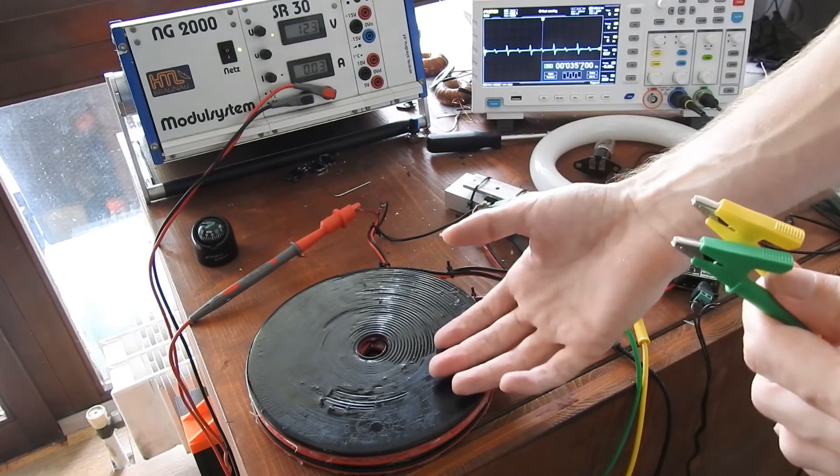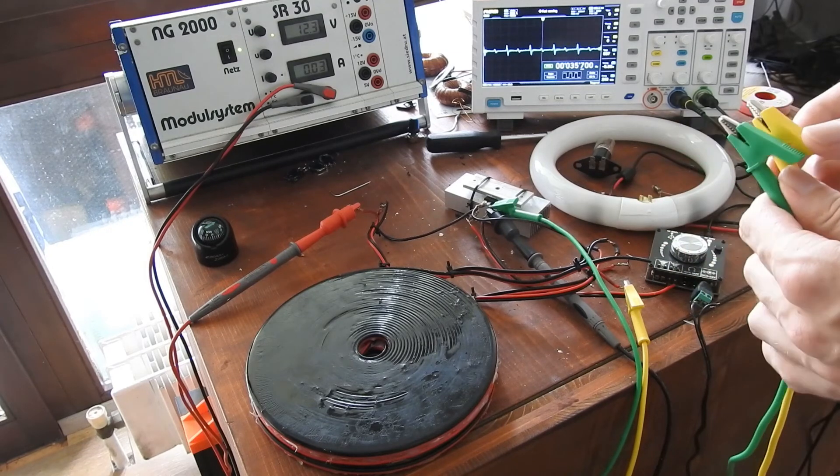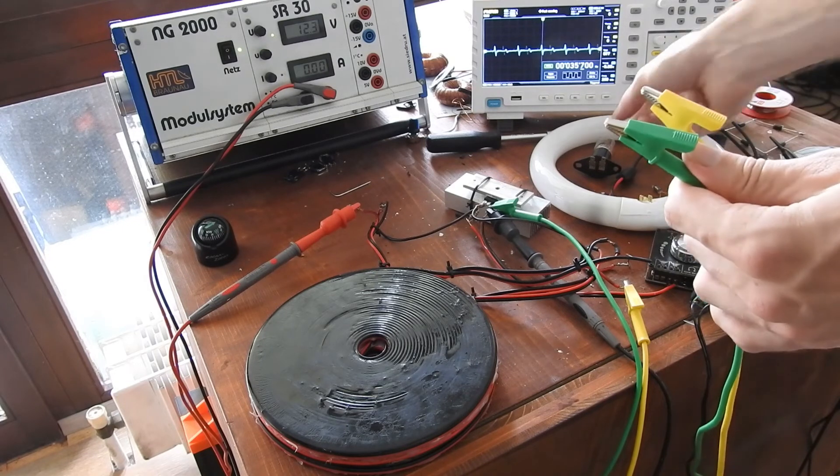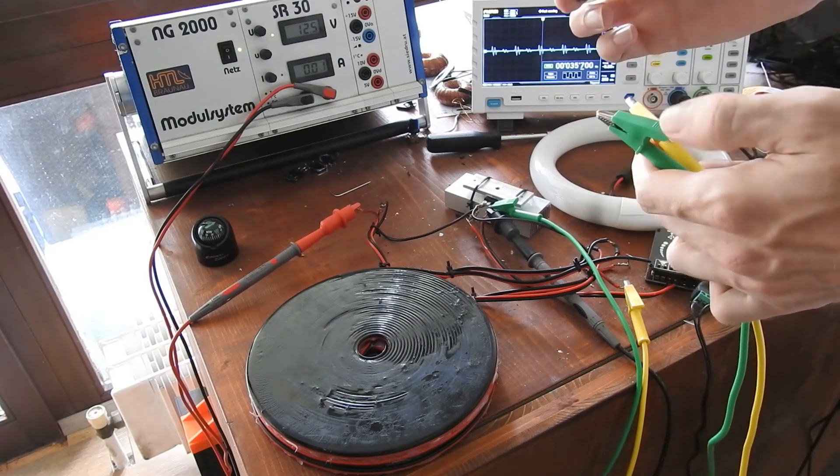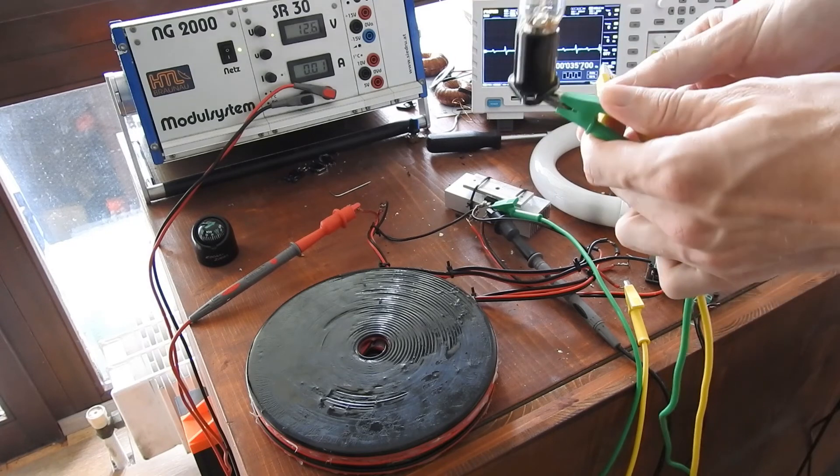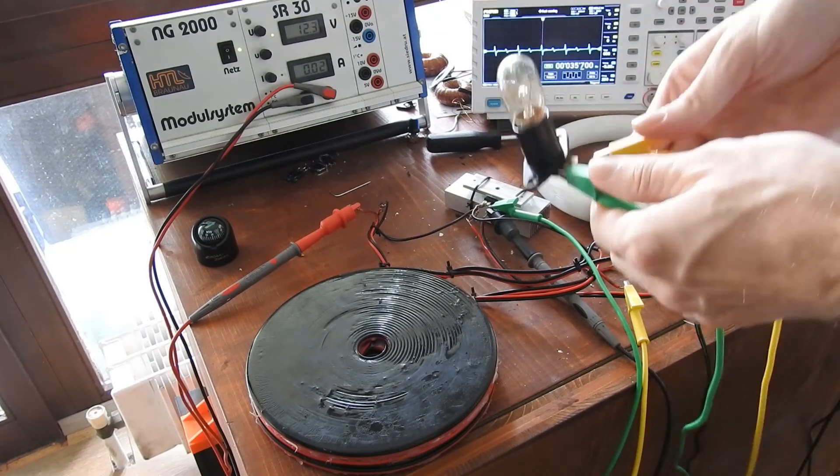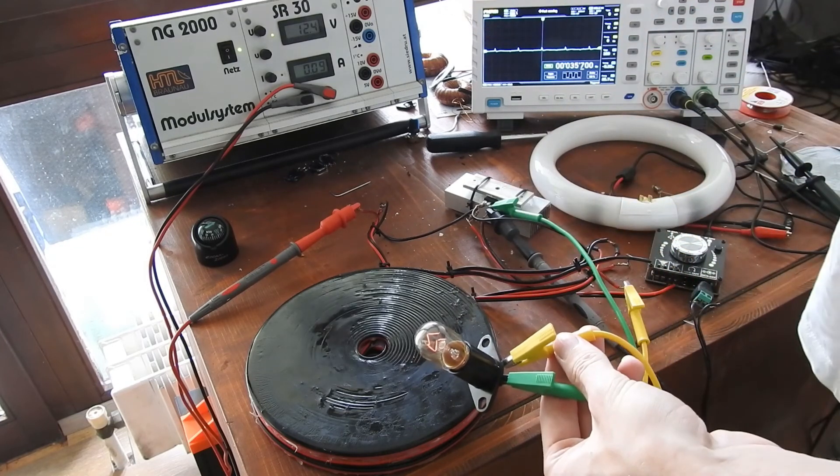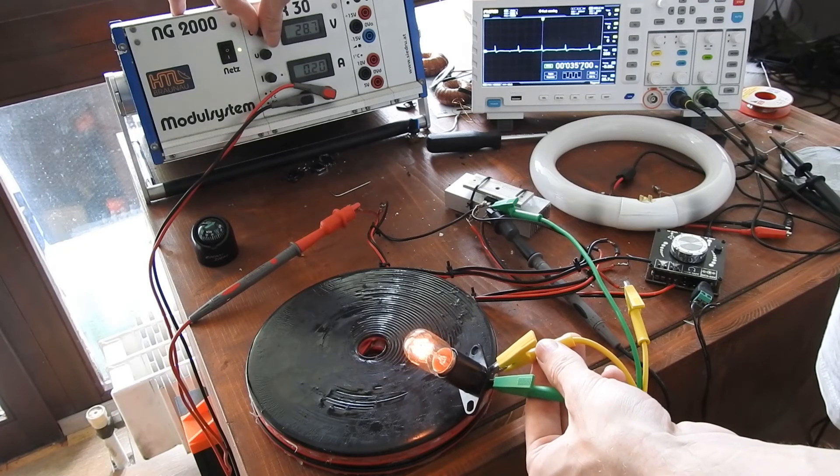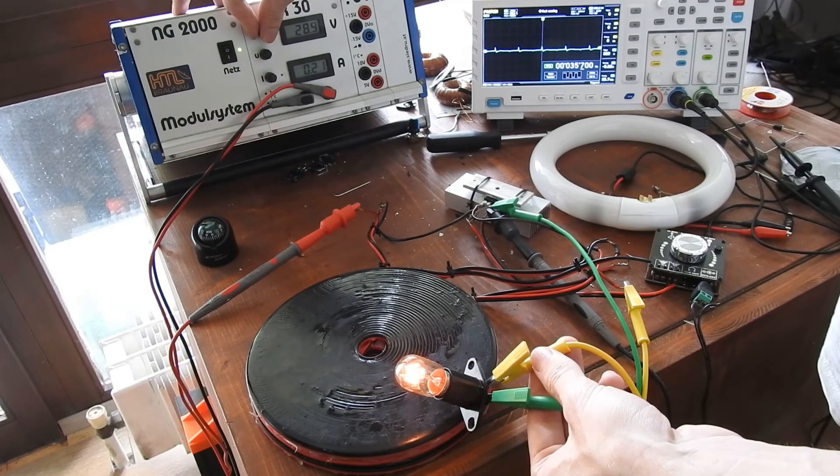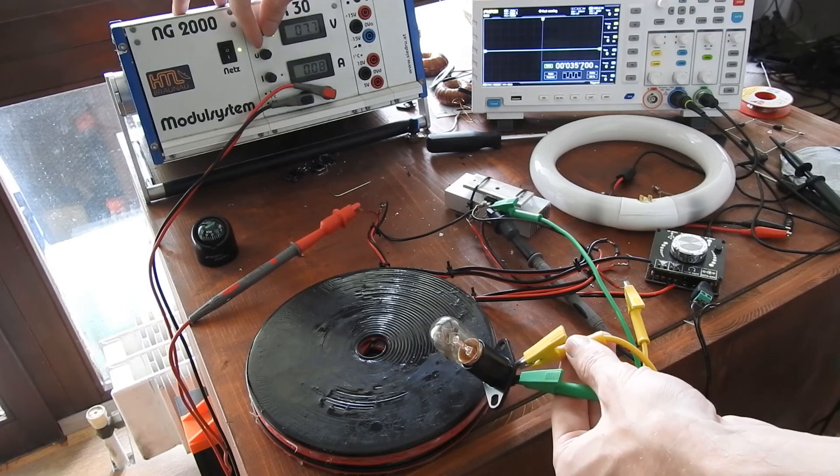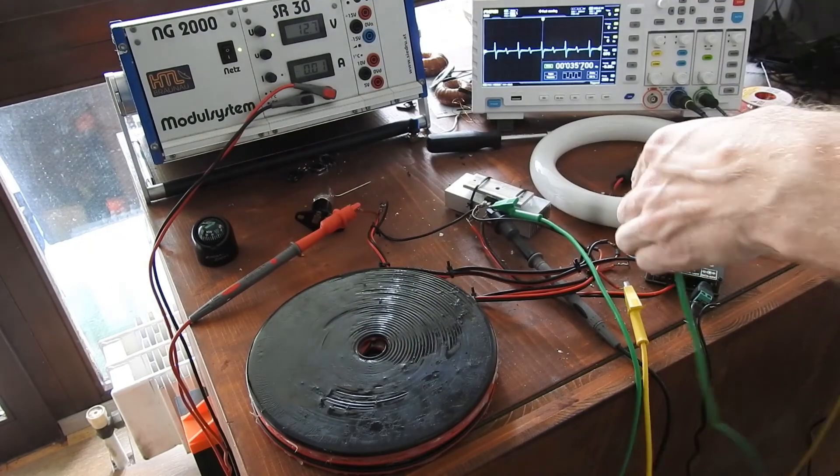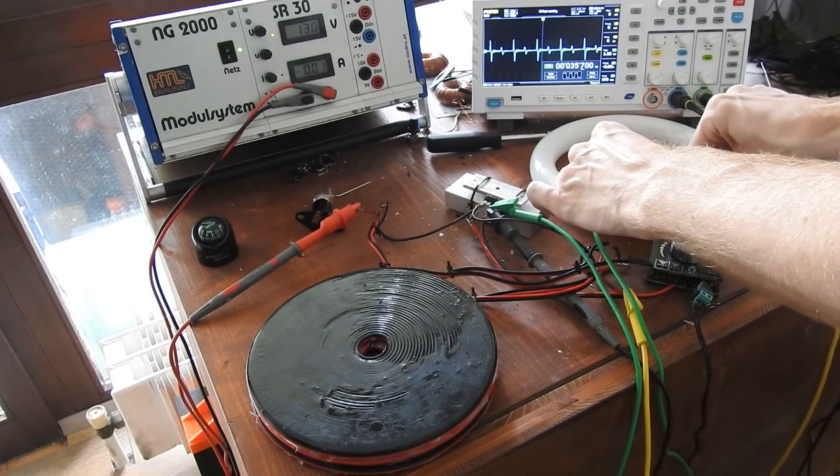So this is a 230 volt light bulb. If I increase the voltage even more you will see it will light up quite bright at the relatively low power consumption. And we can also do the same with a fluorescent tube.